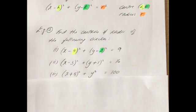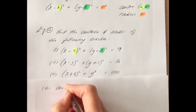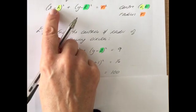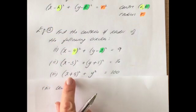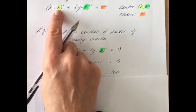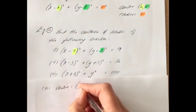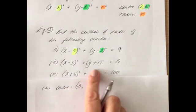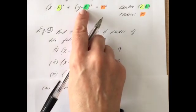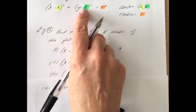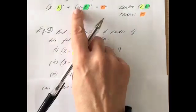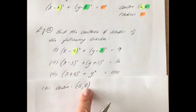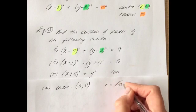For (x + 5)² + y² = 100: the x has a plus 5, which means it must have been x minus (−5), so the x-coordinate of the center is −5. There's just y² with nothing subtracted, implying k = 0, so the y-coordinate of the center is 0. The radius is the square root of 100, which is 10.